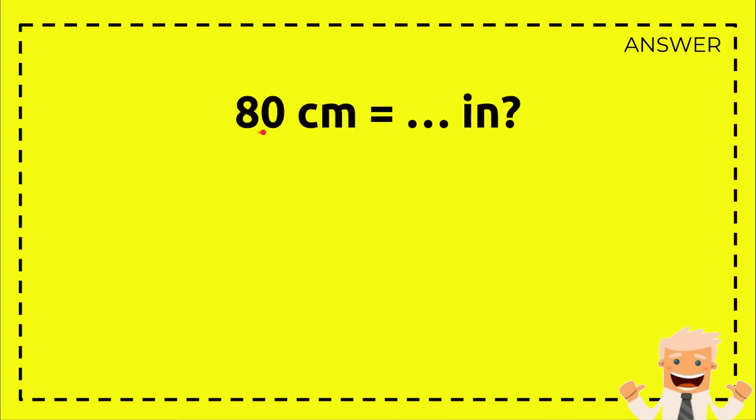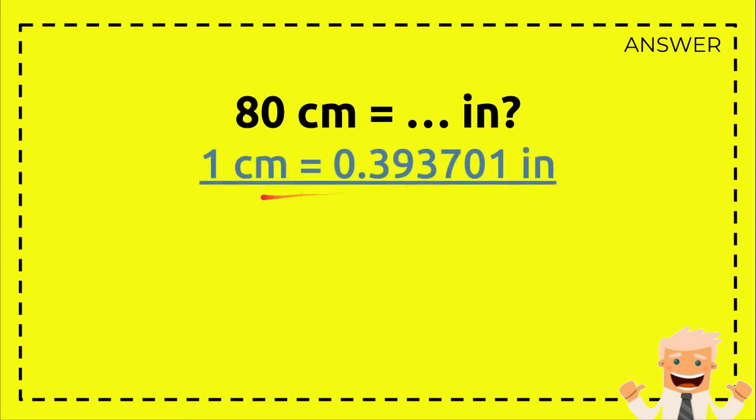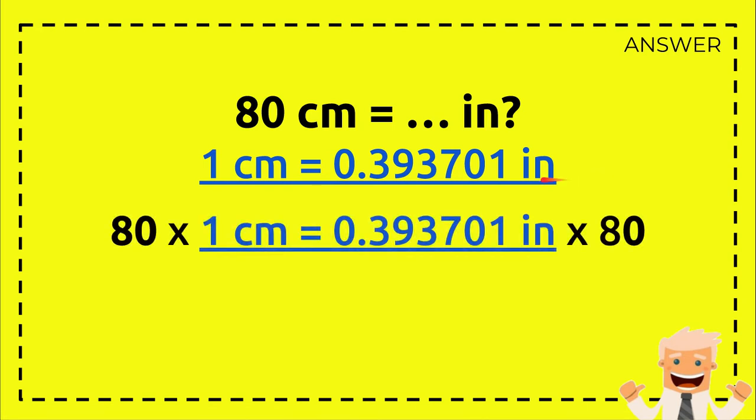First to answer this problem you need to write down the question again: 80 centimeters equals how many inches, and this is the formula. Write the formula again: 1 centimeter equals this number. And now this is how you solve this problem. You need to write down the formula which we have from here.